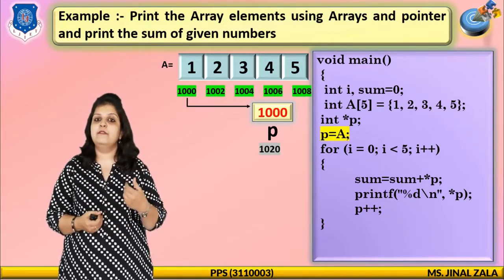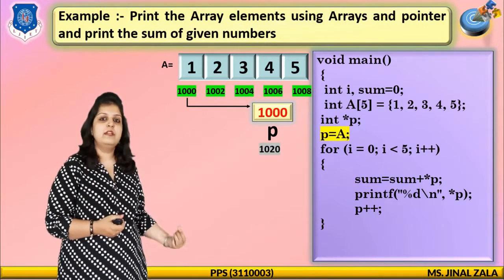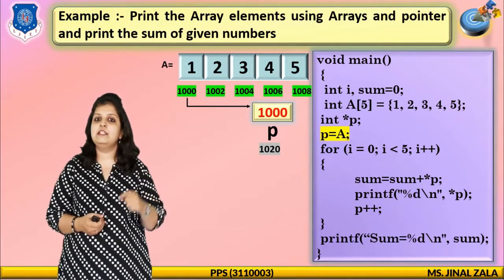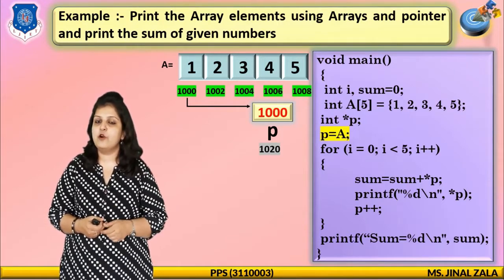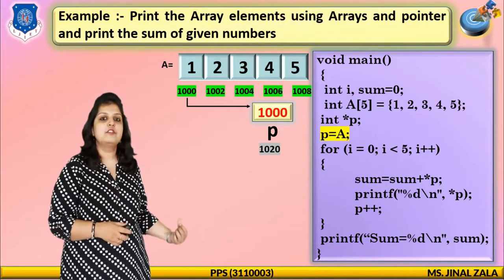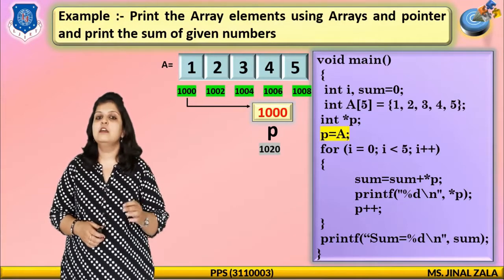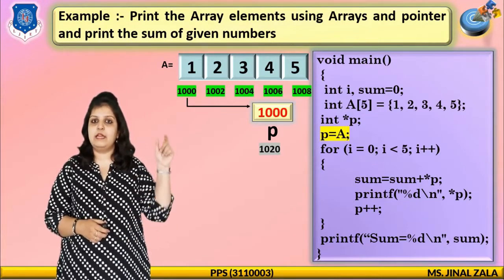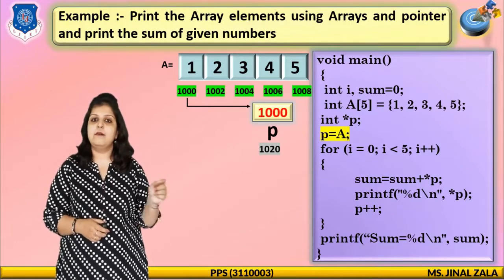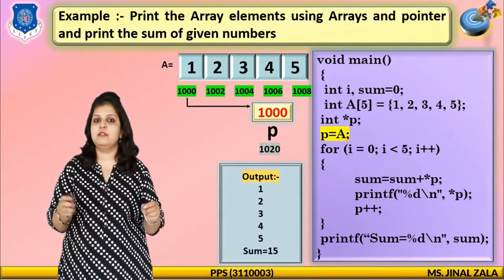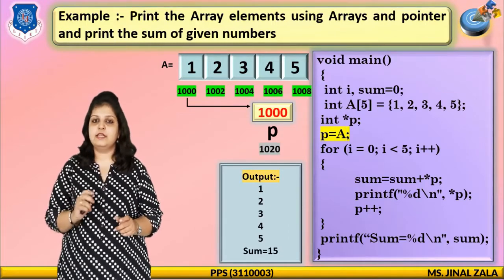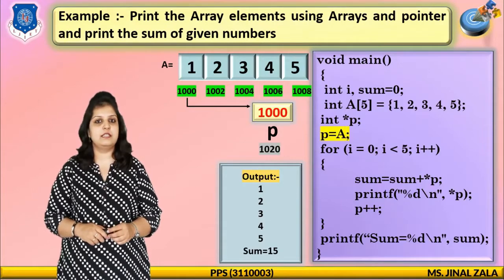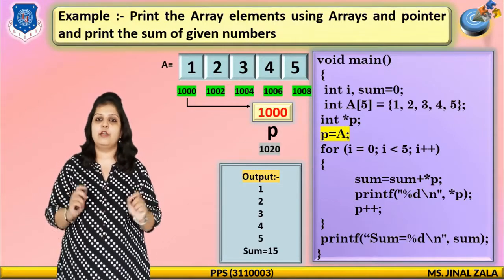After the loop completes, print the final sum using one printf function and print the value of our sum variable. We get output 1, 2, 3, 4, 5 and sum equals 15, because 1 plus 2 plus 3 plus 4 plus 5 equals 15. In this way, we can use the concept of array and pointer.